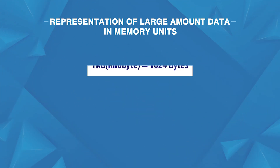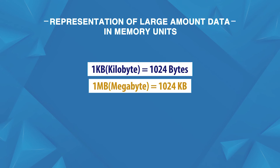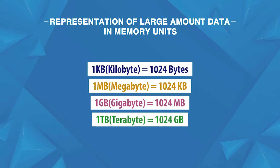The memory units are as follows: 1 KB (Kilobyte) = 1024 bytes; 1 MB (Megabyte) = 1024 KB; 1 GB (Gigabyte) = 1024 MB; 1 TB (Terabyte) = 1024 GB.